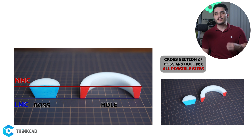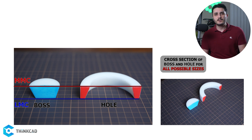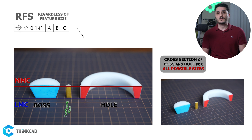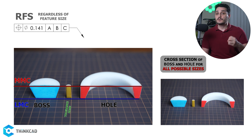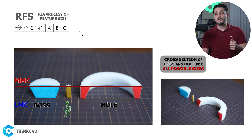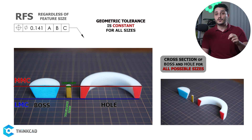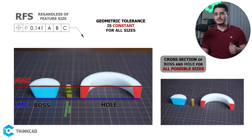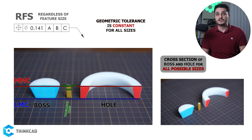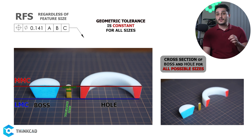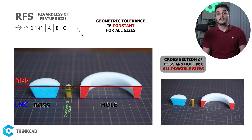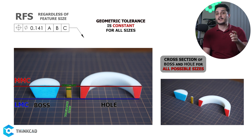Let's see what our geometric tolerance looks like when we don't have any material modifiers in our GD&T callout. As I said, this is what we call RFS, or regardless of feature size, which means our geometric tolerance is the same no matter what size our features are. As you can see, our tolerance zone has the same diameter as we move from LMC to MMC. Remember, this is the cross-section of our position tolerance from the center — it would be a full cylindrical zone in reality.